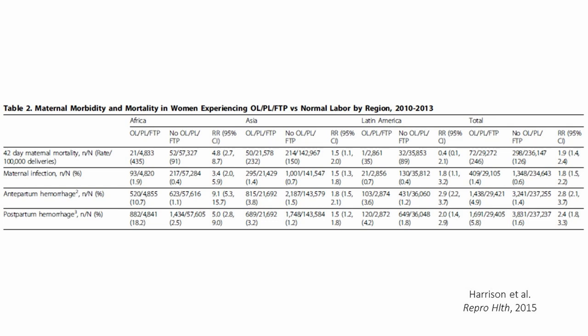We also looked at perinatal outcomes. This chart shows maternal morbidity and mortality related to obstructive labor within the global network. You can see that risks of maternal mortality, infection, and bleeding — both antenatally and postpartum — are increased in the setting of obstructive labor. In the African setting and at the Asian sites, we see an increased risk of adverse outcomes, with a non-significant decrease in maternal mortality at our Latin American sites, and then increased risk overall.